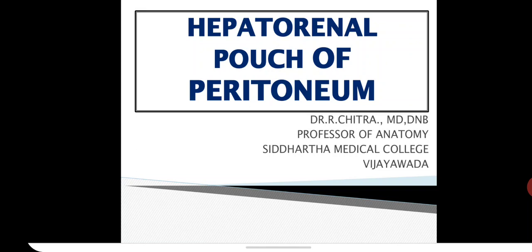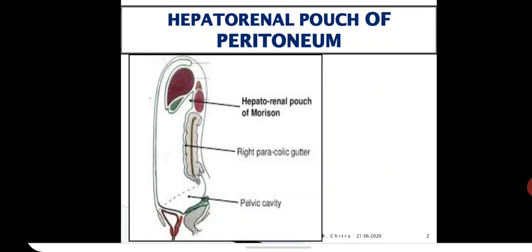The boundaries are shown clearly in this image. In the class of the peritoneum, we have already seen that the right layer of the falciform ligament is reflected to the anterior surface of the right kidney, and that forms the Hepatorenal Pouch. This Hepatorenal Pouch of Morrison is indicated by the first arrow in the image.